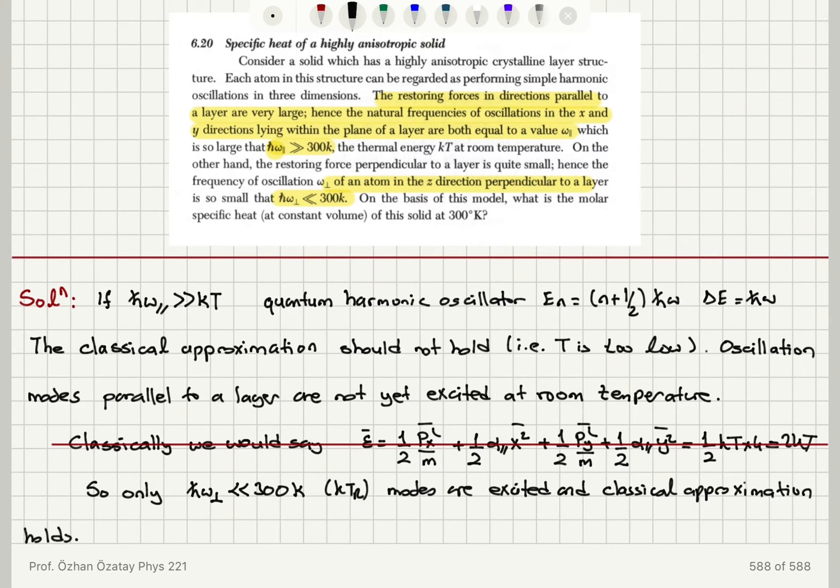Therefore, we can calculate the average energy as pz squared over 2m plus 1/2 alpha perpendicular z squared bar, which is 1/2 kT times 2. There are 2 quadratic terms, kT.